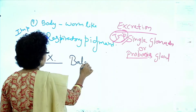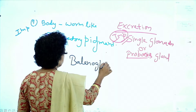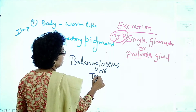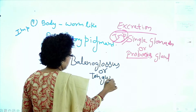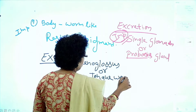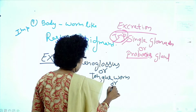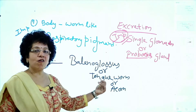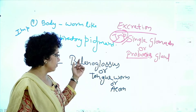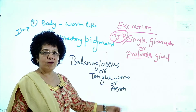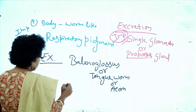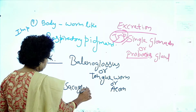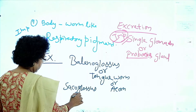Example: Balanoglossus — the other name is tongue worm or acorn worm. The other name of Balanoglossus is tongue worm. Next example: Saccoglossus. Also, Rhabdopleura.